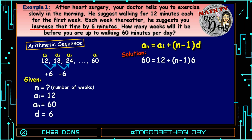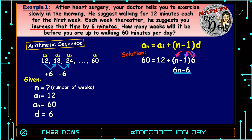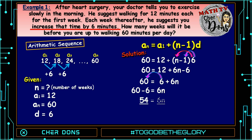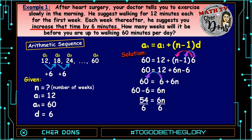By the distributive property of multiplication, we multiply 6 to quantity n minus 1, and that equals 6n minus 6. So 60 is equal to 12 plus 6n minus 6. Combining like terms, 12 minus 6 equals 6, so 60 is equal to 6 plus 6n. Transposing 6, from positive it becomes negative: 60 minus 6 equals 54. So 54 equals 6n. Dividing both sides by 6 to isolate n, we get n is equal to 9.